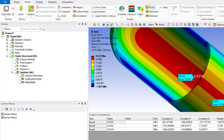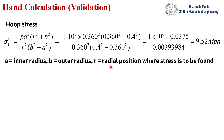We will compare these hoop stresses and longitudinal stresses with our hand calculations to validate the ANSYS results. The hoop stress at the inner surface of the pressure vessel can be found by using this equation. In this equation, a is the inner radius, b is the outer radius, and r is the position in the radial direction at which we want to calculate the hoop stress.